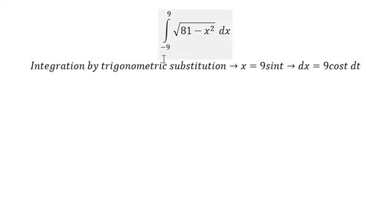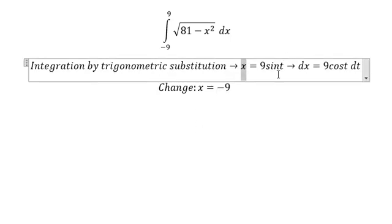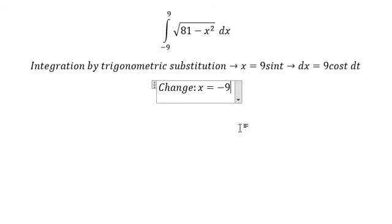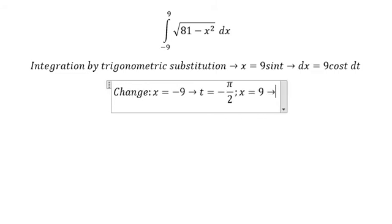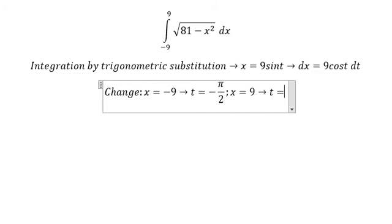Next we need to change the boundary. When x equals negative 9, we substitute negative 9 in here to find the value of t. So t should be negative π over 2. If x equals 9, then t should be π over 2.